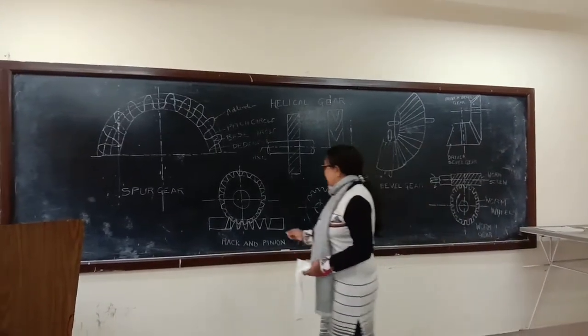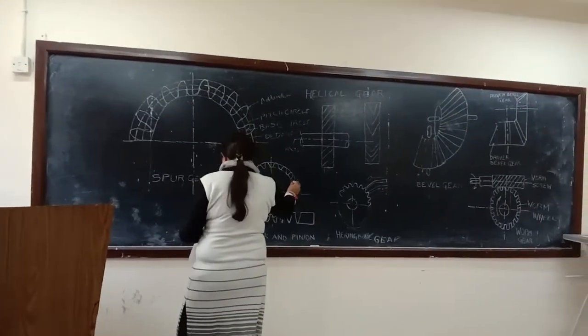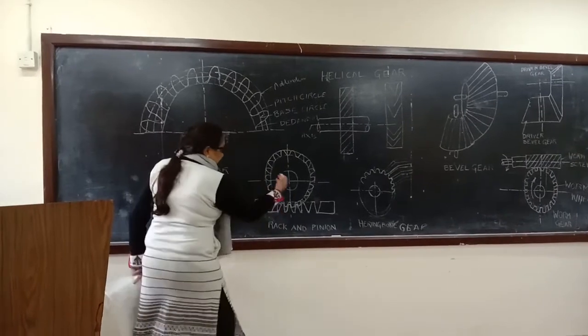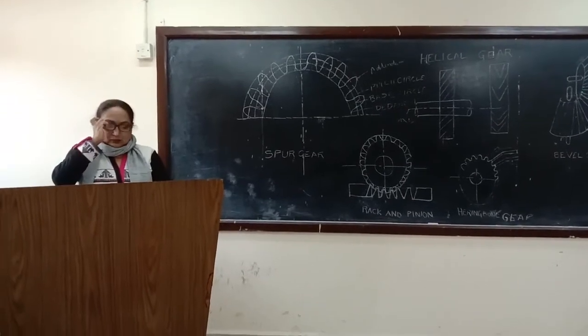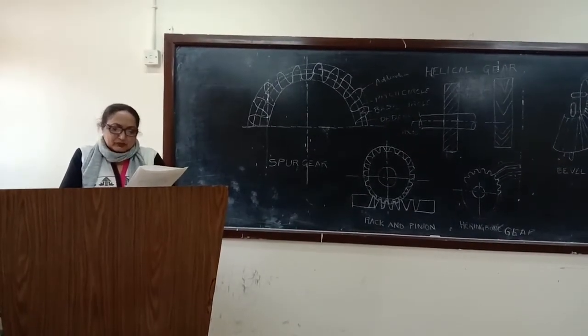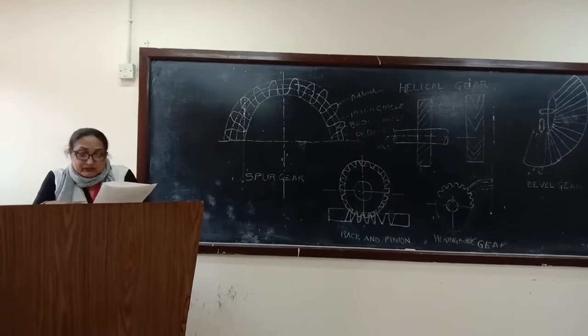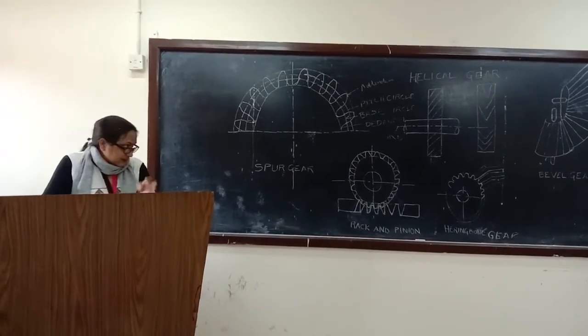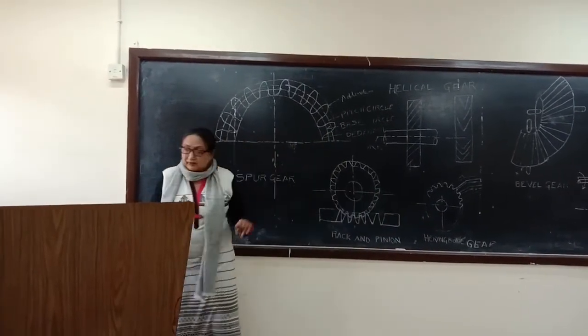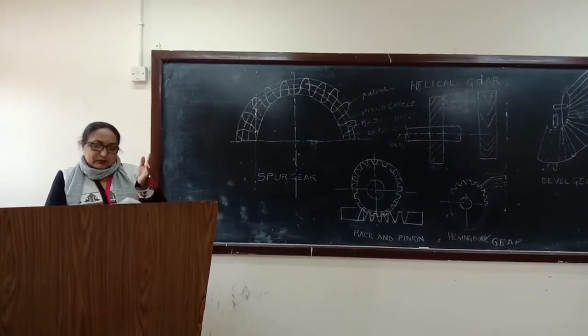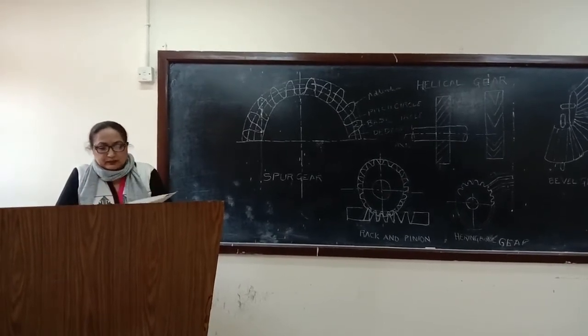Next is rack and pinion gears. The rack and pinion is used to convert rotary motion into linear motion. Car steering systems use rotary motion, which converts into linear motion through rack and pinion. The steering system controls the front wheels through linear motion.